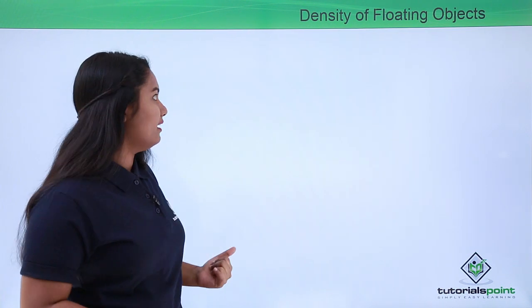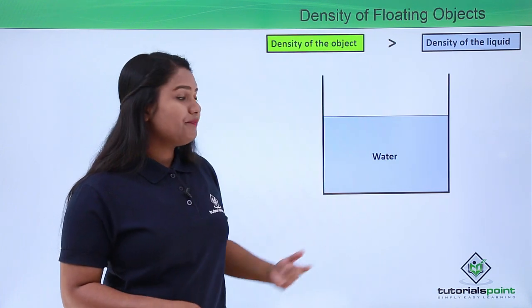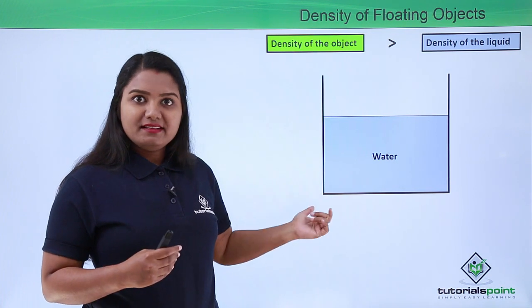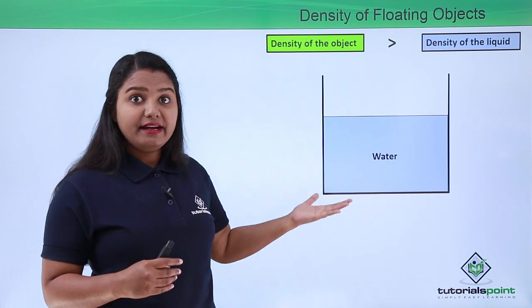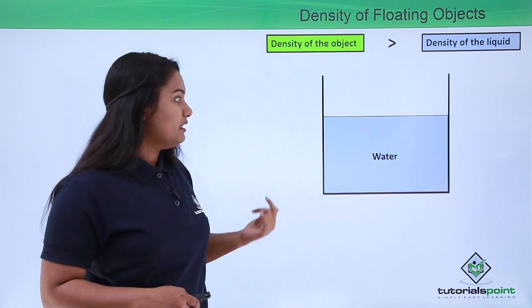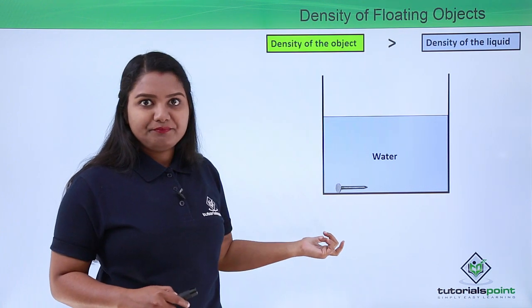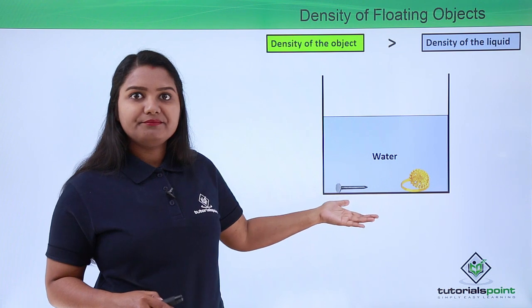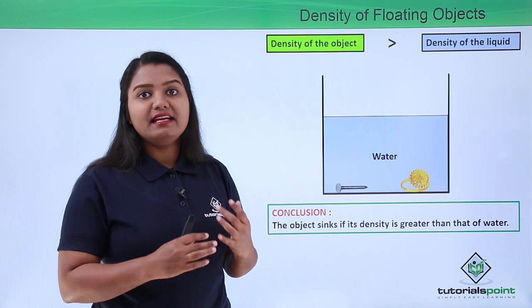In the third case, the density of the object is greater than the density of the liquid. From the table we know that metals like aluminum, iron, mercury, silver, and gold have densities greater than water. When we place an iron nail on water, it straight away sinks to the bottom. When we repeat the same with a ring made of gold, it also sinks to the bottom. So objects sink when their density is greater than that of the fluid.